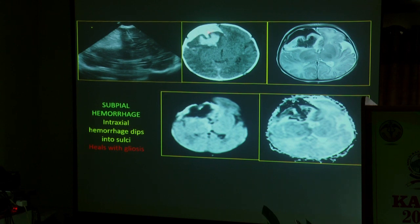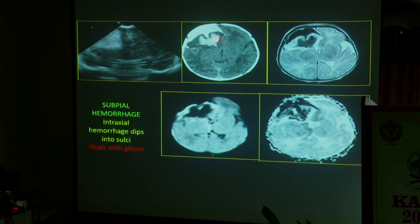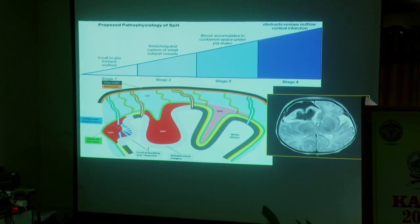Since subpial hemorrhage is intraaxial, it compresses the veins, producing venous blockage, which causes venous infarct on the other side — seen as hemorrhage in the inner aspect of the parenchyma. The subpial hemorrhage with intraparenchymal bleed always heals with gliosis.